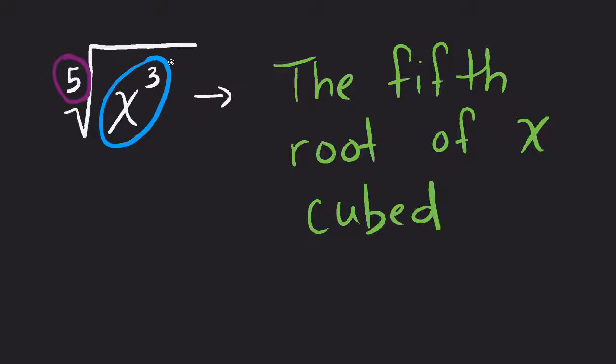The fifth root of x cubed means in order to solve this problem, I need 5. That's what I need, is 5 of those items. And what do I have? On the inside I have x cubed, so I only have 3, but I need 5 to complete this set. So really, I can't simplify this problem.